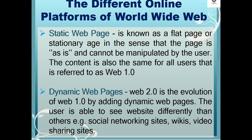A static web page, known as a flat or stationary page, cannot be manipulated by the user and the content is the same for all users — this is referred to as Web 1.0. Dynamic web pages are associated with Web 2.0, the evolution of Web 1.0 by adding dynamic pages. The user is able to see a website differently than others, like social networking sites, wikis, and video sharing sites.